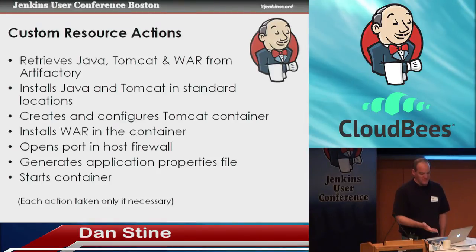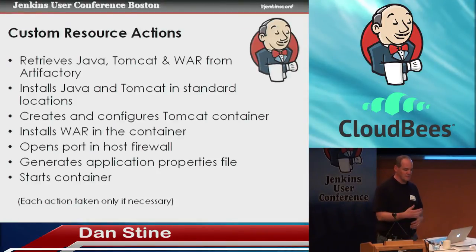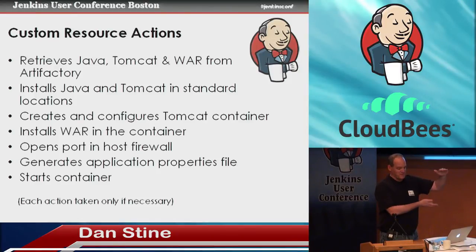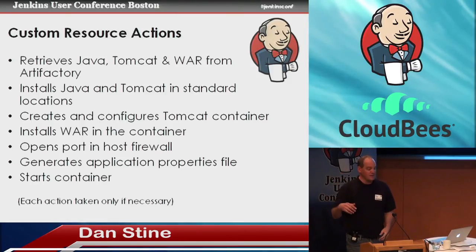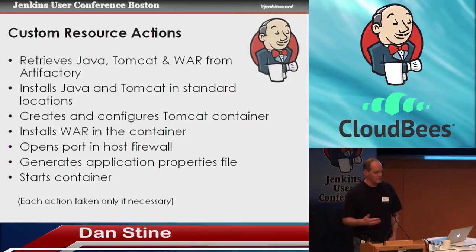What happens under the covers when you run this? It retrieves Java, Tomcat, and the WAR file from Artifactory, installs them in a standard location, creates the container, installs the WAR, opens the port in the host firewall, generates the properties file, and starts the container. You're getting much more bang for your buck — 10 or 12 lines and all that is happening. And on a repeated deploy, we're not going to download the same version of Java again and reinstall it — only if we upgrade the version — so it's smart in that fashion.